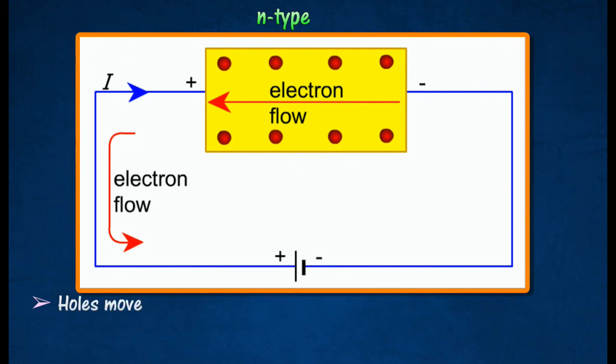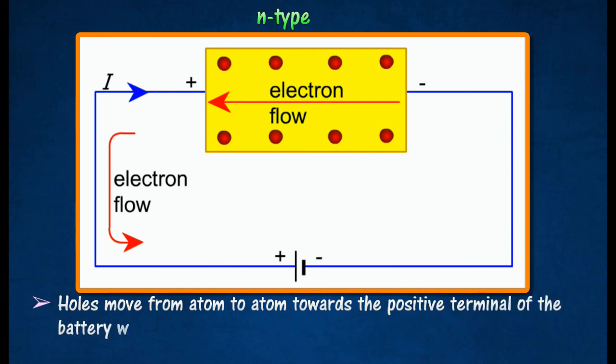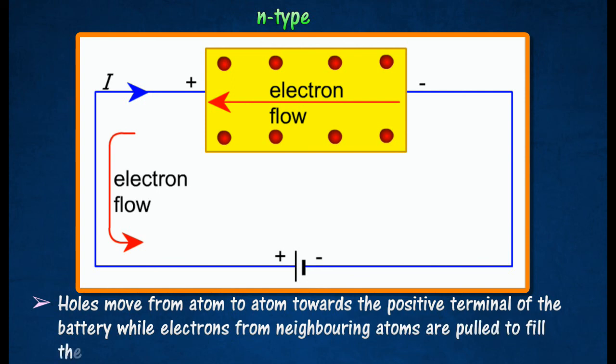A hole is an atom short of an electron when a free electron leaves an atom, and this hole may be filled by another electron. Thus, holes move from atom to atom towards the positive terminal of the battery, while electrons from neighboring atoms are pulled to fill the holes.